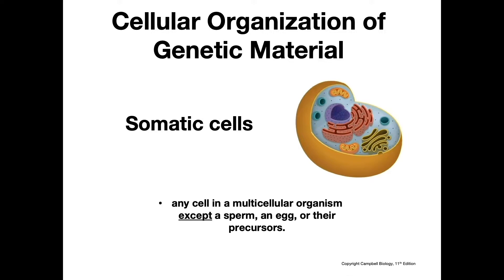Somatic cells are any cell in a multicellular organism except for sperm, eggs, or their precursors. Somatic cells are diploid, meaning they have two full sets of chromosomes. In humans, the diploid number is 46 and the haploid number is 23. So sperm and eggs have 23 chromosomes, and somatic cells have 46. A cell cannot be both a somatic cell and a gamete — these two terms are mutually exclusive.